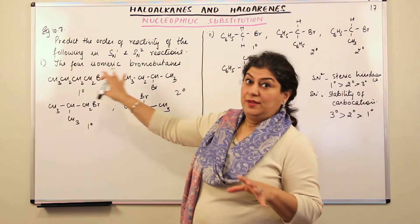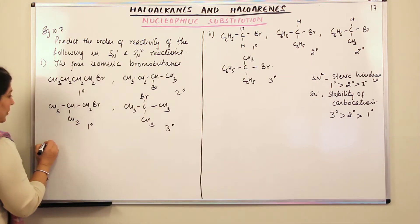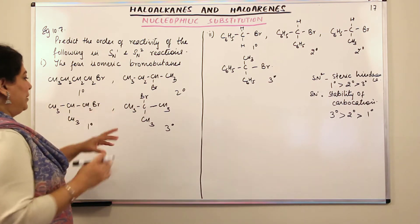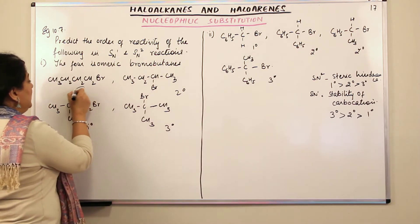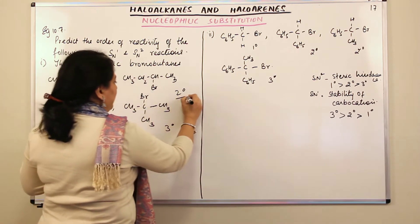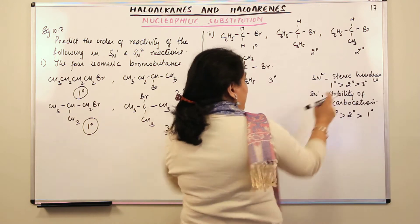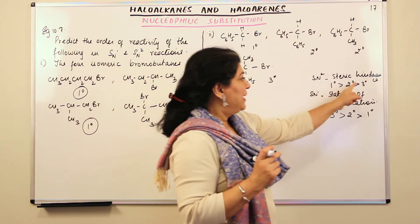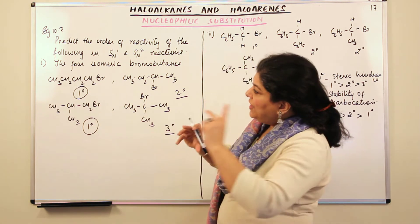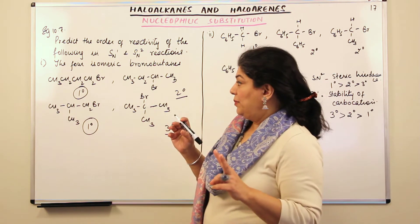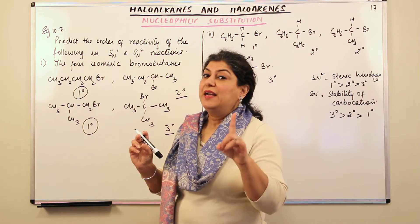Keeping this sequence in mind, let us judge these molecules. These two are primary, this one is secondary, and this one is tertiary. For SN2, primary would be the most reactive and tertiary the least reactive. But the problem is that you have two different primary haloalkanes. Out of these two primaries, which one would have more steric hindrance — or, in terms of SN1, which one would form a more stable carbocation?